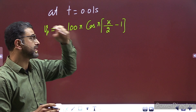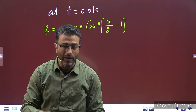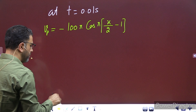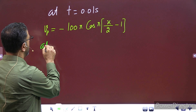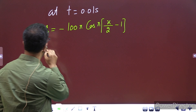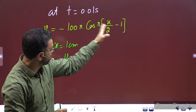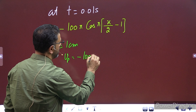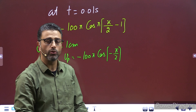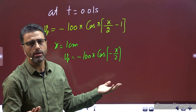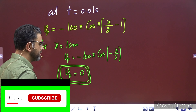Cos of minus π/2 is same as cos of π/2 — cos is an even function। Cos(π/2) = 0, so यह सारा 0 बन जाएगा। So vp = 0। Particle velocity 0 के बराबर है।